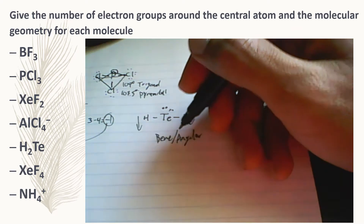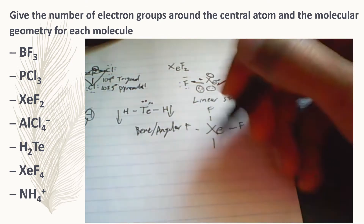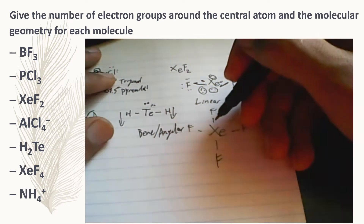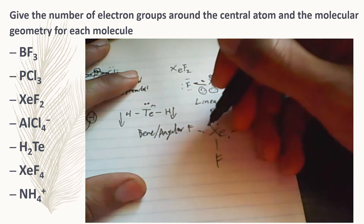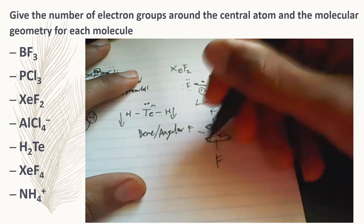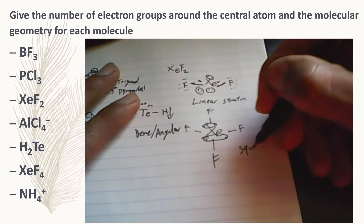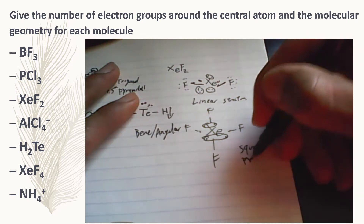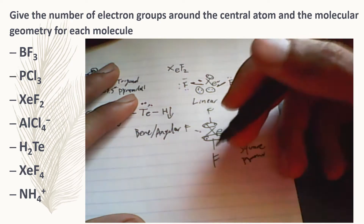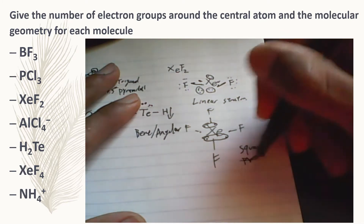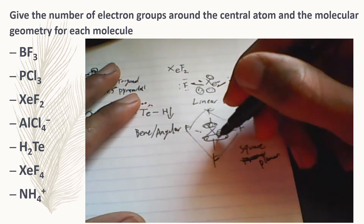The next one is xenon tetrafluoride. You're going to have two lone pairs of electrons and four things bonded to the xenon, giving eight bonding groups total. Looking at the molecular geometry chart, this is a square planar structure, with angles of 180 and 90 degrees, and one lone pair on the top and one lone pair on the bottom.